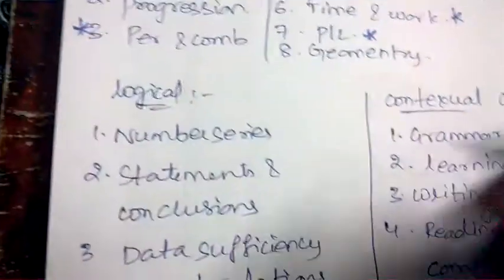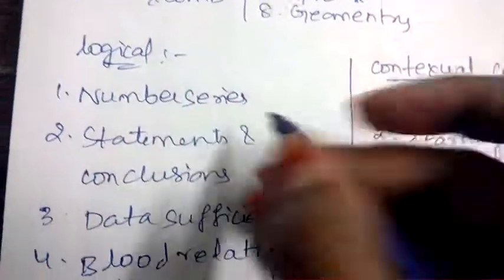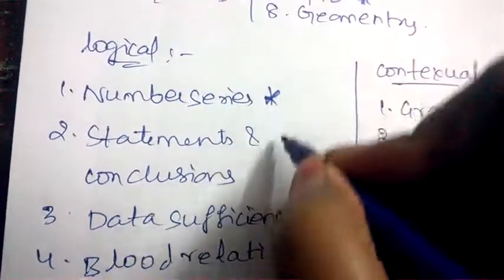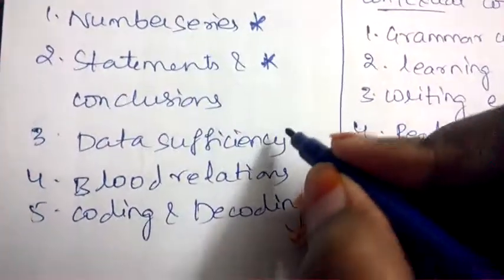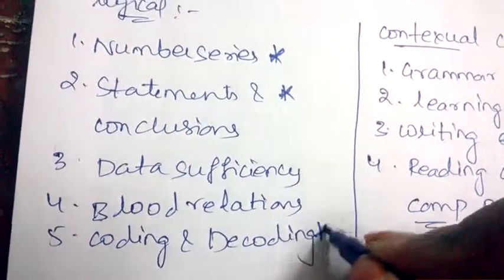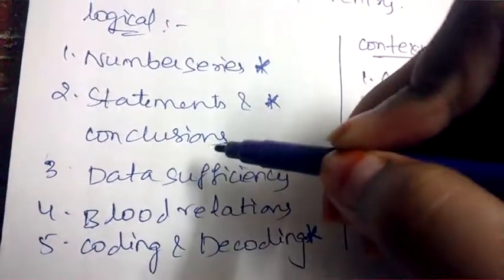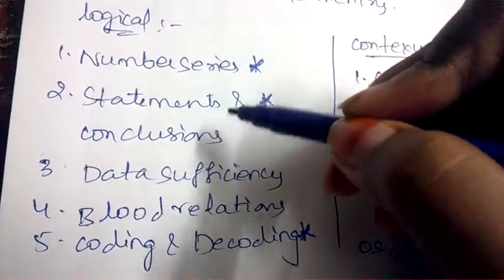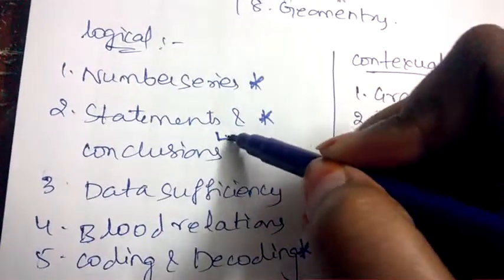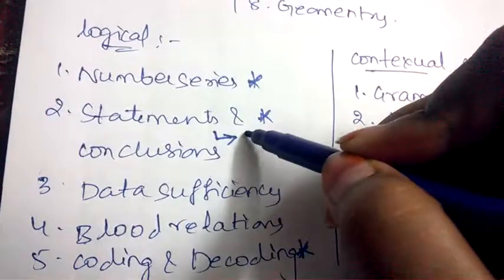For logical reasoning: number series, statements and conclusion, data sufficiency, blood relation, and coding and decoding. Out of which number series is important. Statements and conclusion means you need to complete the statement like statement completion.